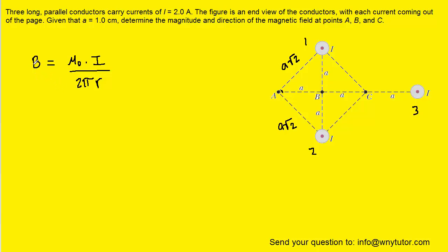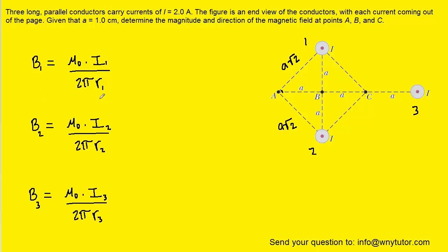We can calculate the magnetic field produced by a current-carrying wire using the equation shown on the screen. We'll set up the magnetic field calculation for the three wires, attaching subscripts to both the current and the distance for wire 1, wire 2, and wire 3. We're looking for the distance to point A in this part of the problem. The currents are all given to be 2 amps. The distance for wire 1 and wire 2 to point A is A√2, and from wire 3 to point A is 3A.